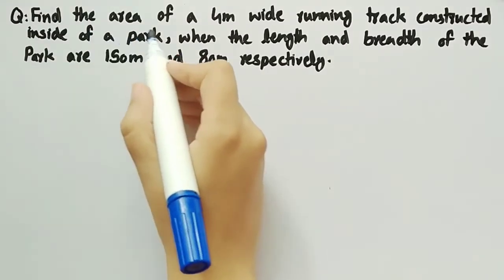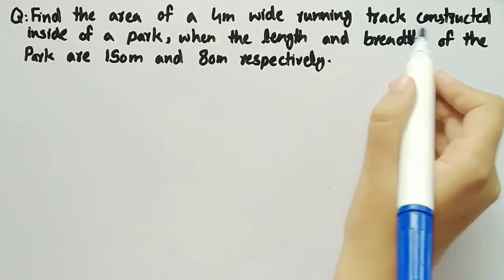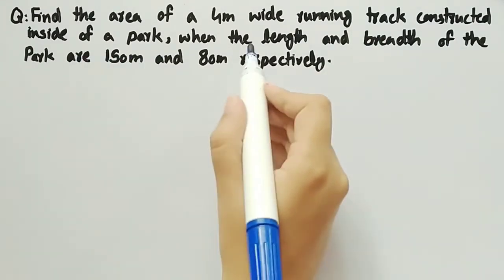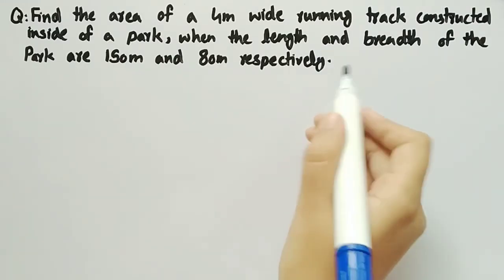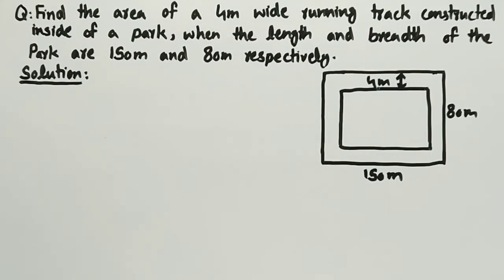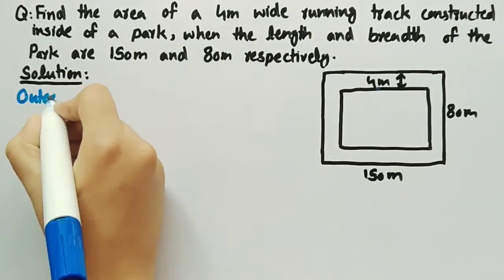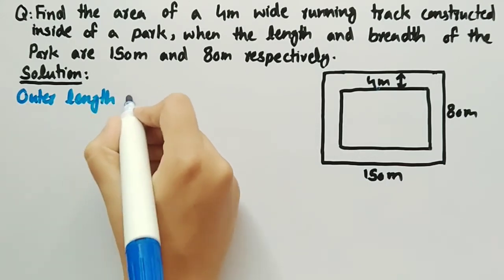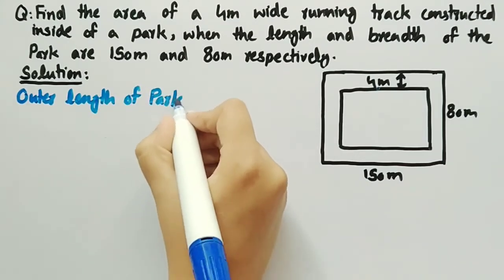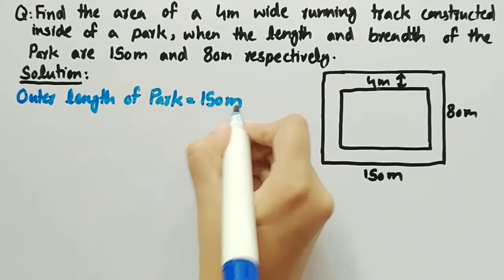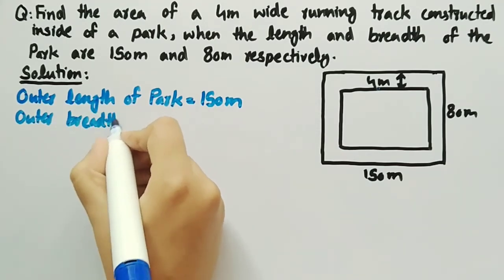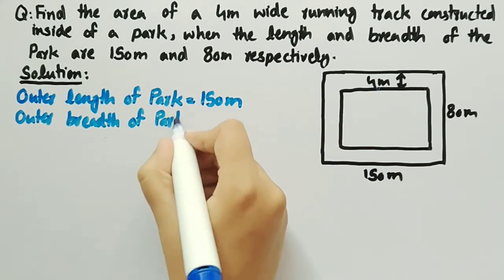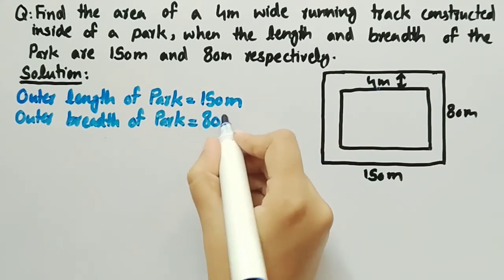In this video we will find the area of a 4 meter wide running track constructed inside of a park, when the length and breadth of the park are 150 meter and 80 meter respectively. Coming towards its solution, we will firstly write the given data: outer length of park is equal to 150 meter and outer breadth of park is equal to 80 meter.